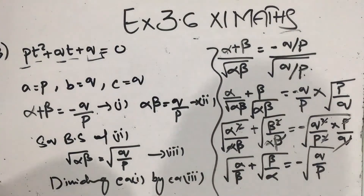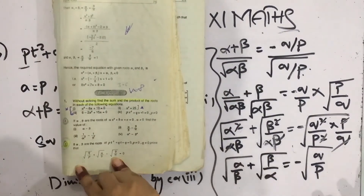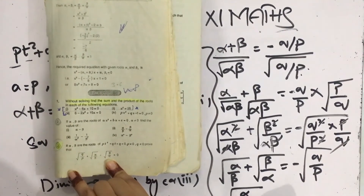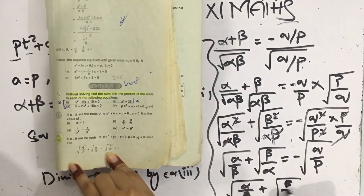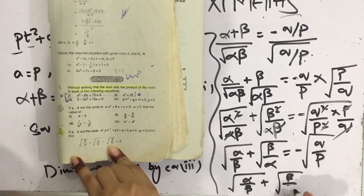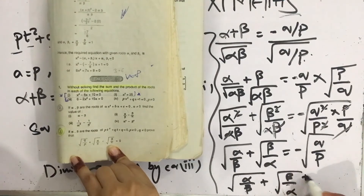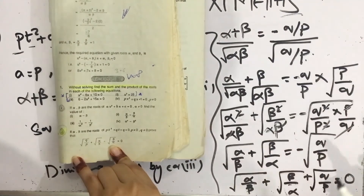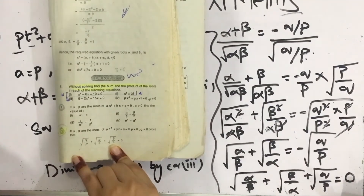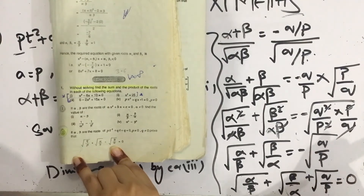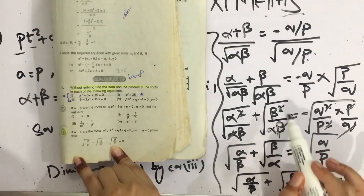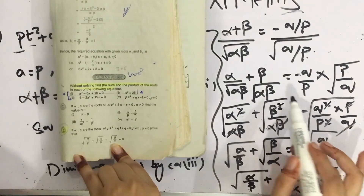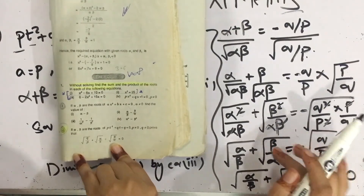So we have proved the statement given in the book. We get: √(α/β) + √(β/α) = minus √(q/p), which rearranges to √(α/β) + √(β/α) + √(q/p) = 0. The key concept to remember is: if you want to put a root on a term, put a square on it so that the root and square cancel out.